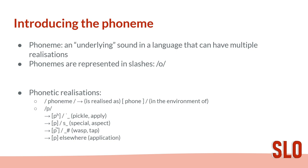As an example, in English the phoneme /p/ is realized as the aspirated P in the environment where it is the first consonant in a stressed syllable. An aspirated P means that when you say this P, if you put your hand in front of your mouth, you would feel a very big puff of air — for example, 'pickle', 'apply'. In comparison, in the environment after an S, the phoneme /p/ is realized just as plain P — for example, 'special', 'aspect'. In these words you would not feel a big puff of air.